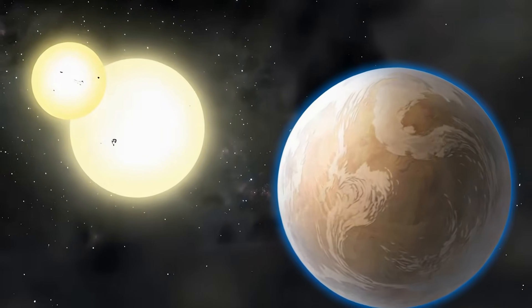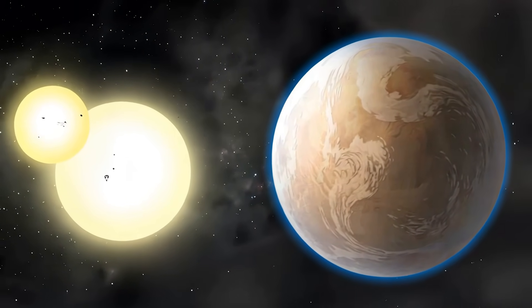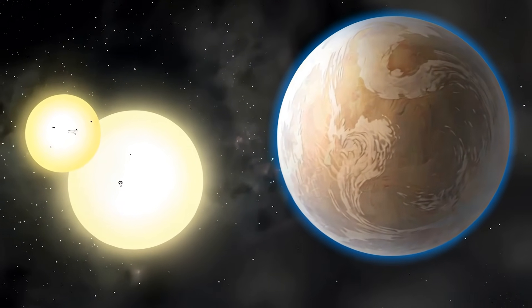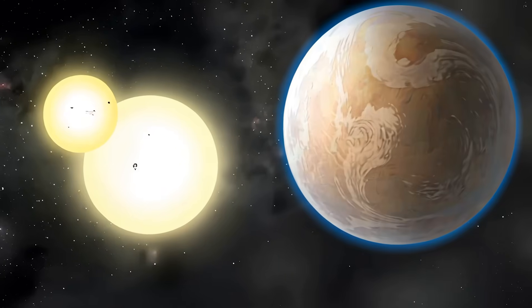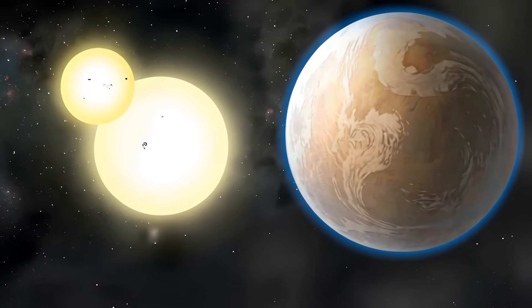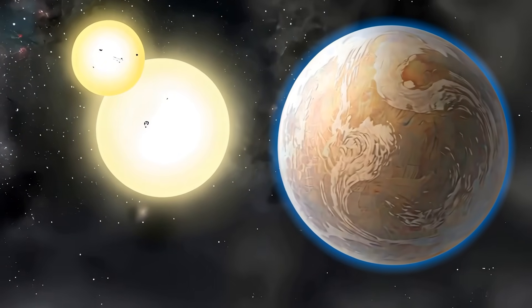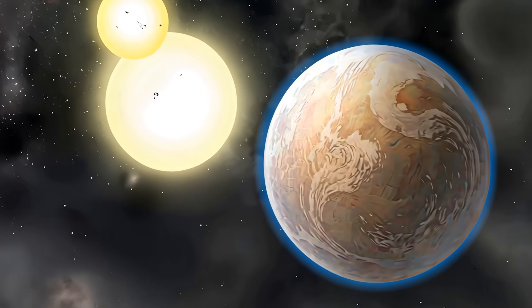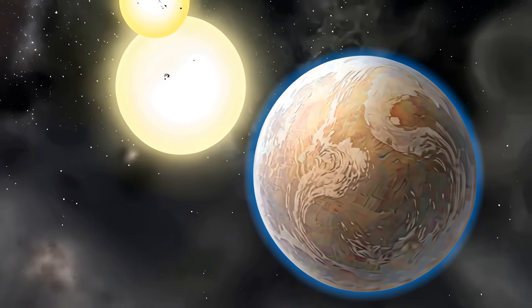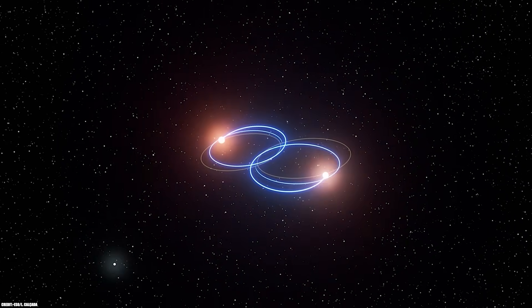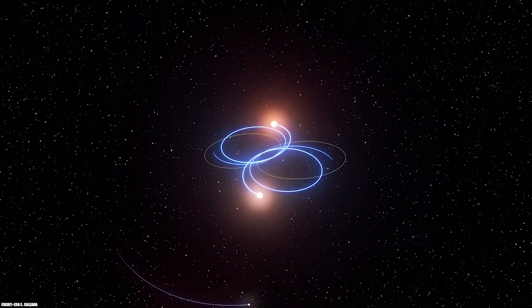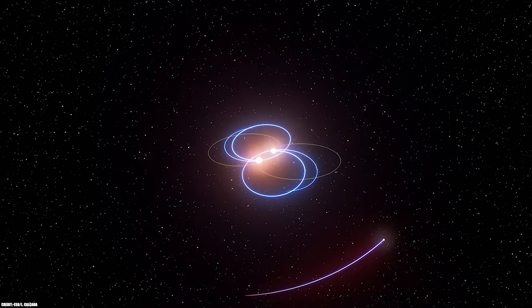Unlike the breathable atmosphere of fictional Tatooine, 2M1510ABb likely has an atmosphere more similar to Neptune or Jupiter. Dense layers of hydrogen and helium with bands of other compounds creating spectacular cloud formations. From space, these would appear as swirling patterns that shift and transform with the planet's orbital dance around its stars.